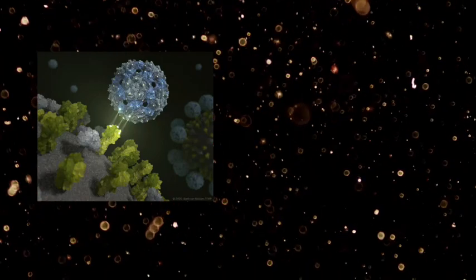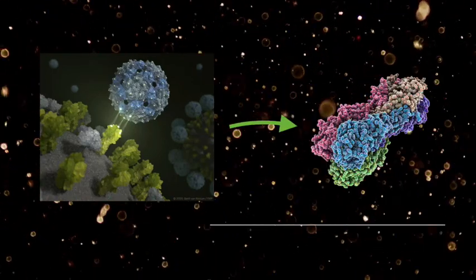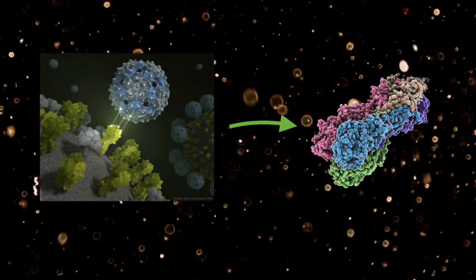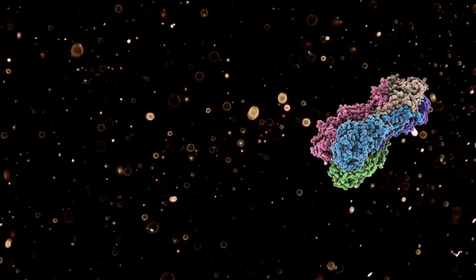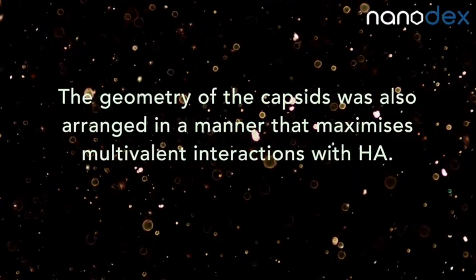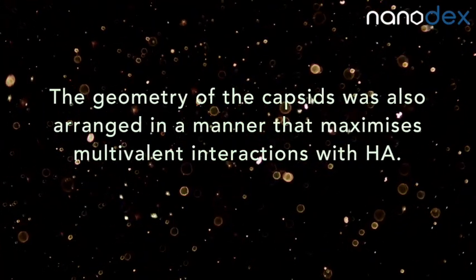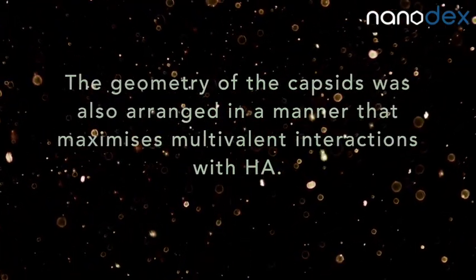The phage capsids were customized so that they bind to hemagglutinin, HA, which is a common spike protein in influenza A. The geometry of the capsids was also arranged in a manner that maximizes multivalent interactions with HA.